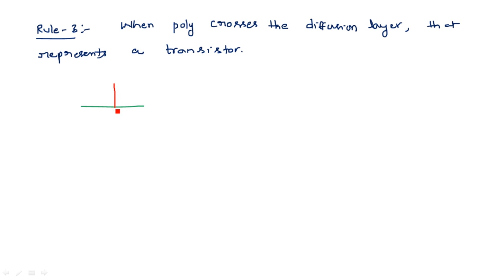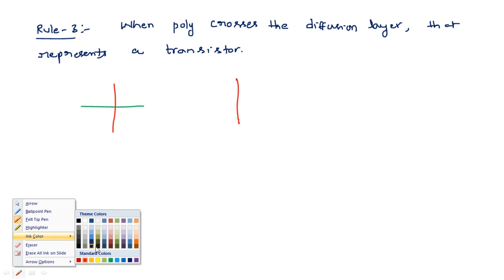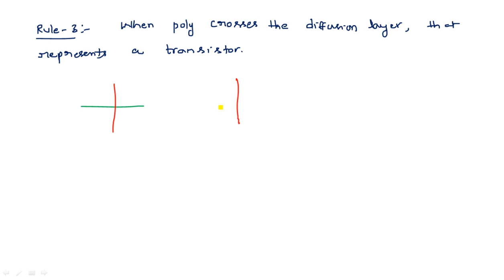Take the green color for n-plus diffusion and draw the polysilicon (red) crossing it — this becomes an NMOS transistor. Take yellow color for p-plus diffusion and cross it with polysilicon — this represents a PMOS transistor. There is no connection between the two layers at the crossing; and importantly, we should not give any contact at that cross point.